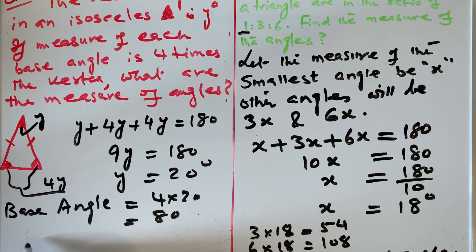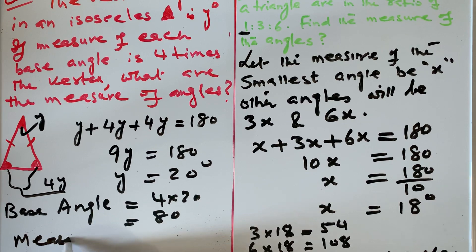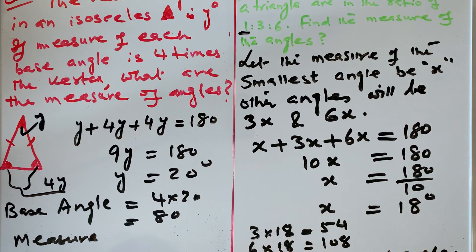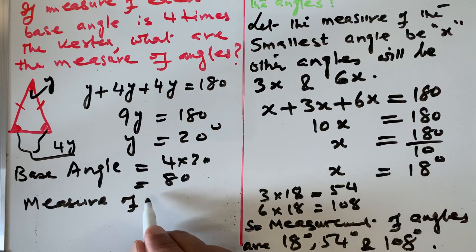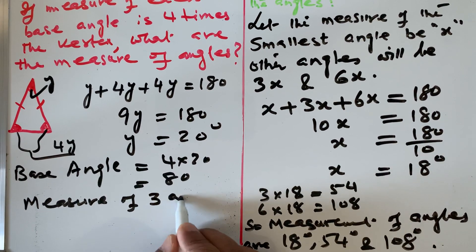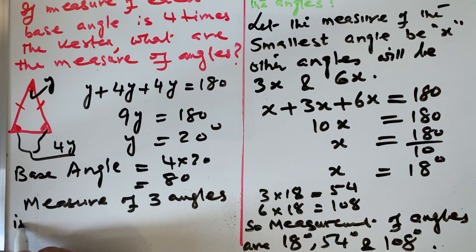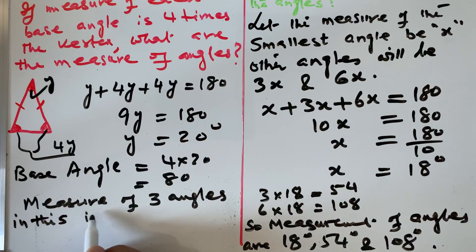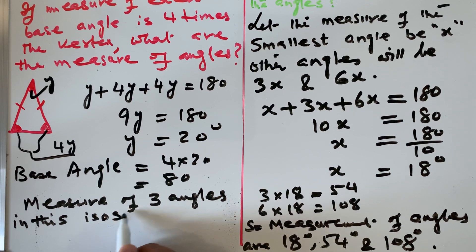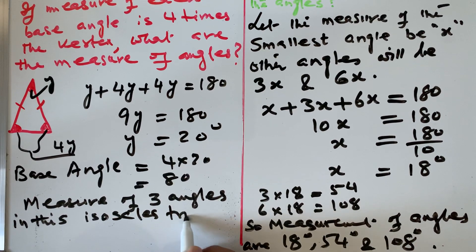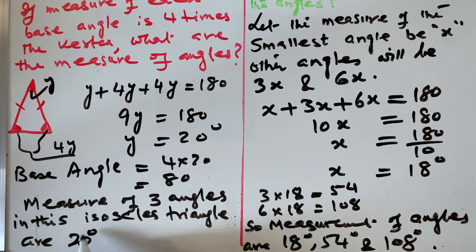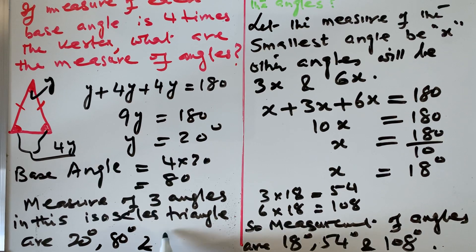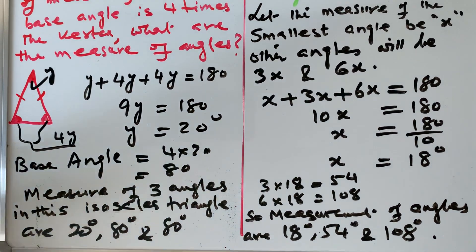So the angles are, the measure of three angles in this isosceles triangle are 20 degrees, 80 degrees, and 80 degrees. If you sum all these three angles, you get 180 again.